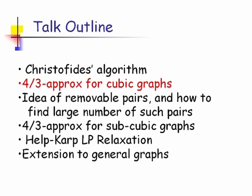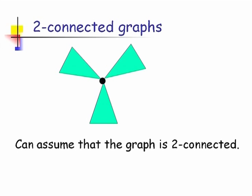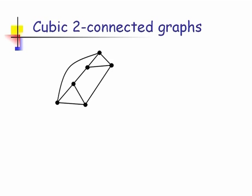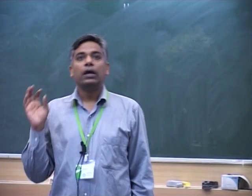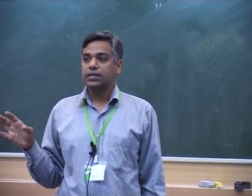Now we get to the 4/3 approximation for cubic graphs. First, we can always assume our graph is two-connected — that there is no cut vertex. If there is a cut vertex whose removal breaks the graph into components, the tour has to be a tour in each of the components. We just remove that vertex, make multiple copies, and solve the problem independently in the various components. So we can assume our graph is two-connected.